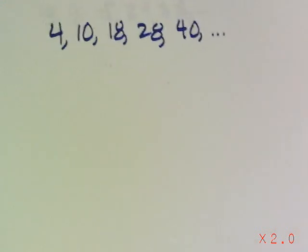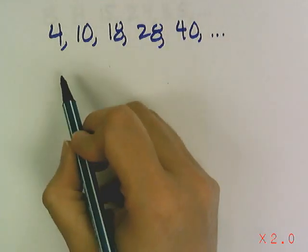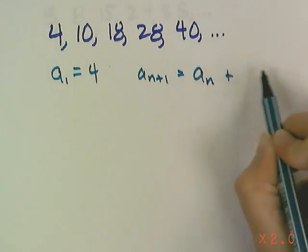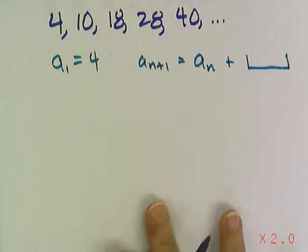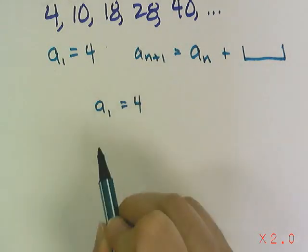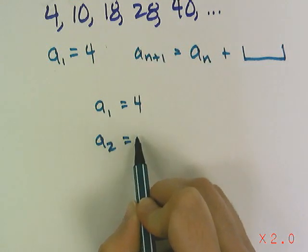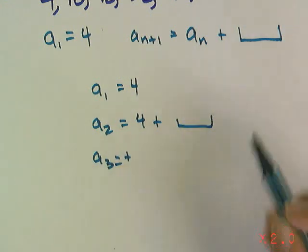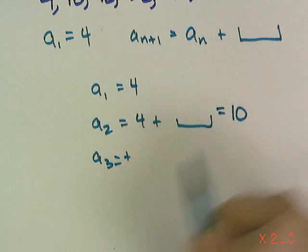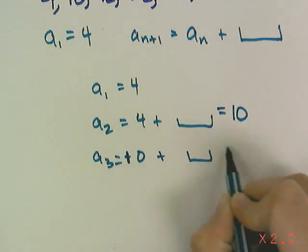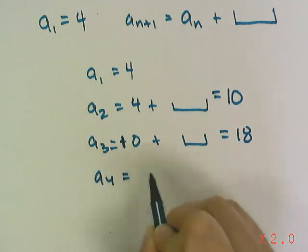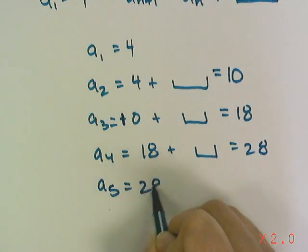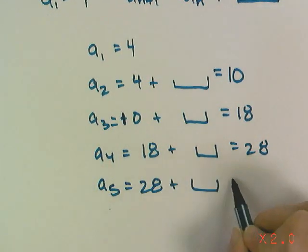Now let's do the last one that was part of the activity. a sub 1 equals 4. a sub n+1 is going to equal a sub n plus something. We have to figure out what the something is. And so then I'm going to write out my sequence. a sub 1 equals 4. a sub 2 equals 4 plus something. a sub 2 equals 4 plus something equals 10. And then a sub 3 is going to be 10 plus something equals 18. a sub 4 is going to be 18 plus something equals 28. And a sub 5 is going to be 28 plus something equals 40.